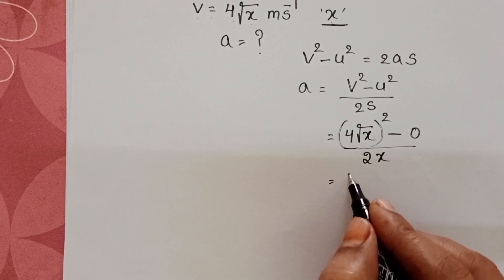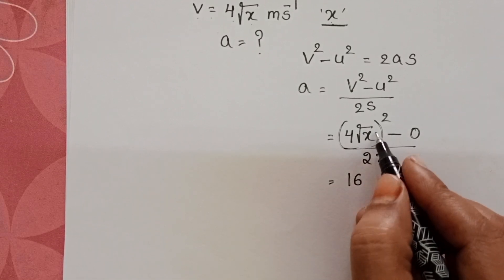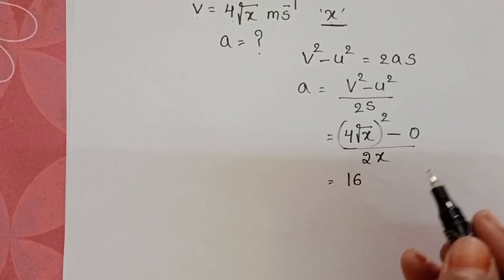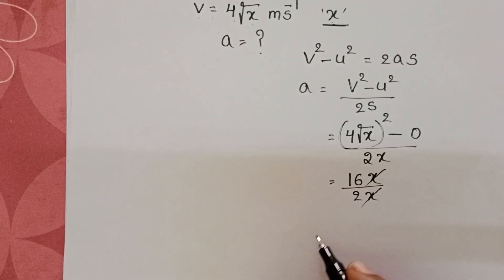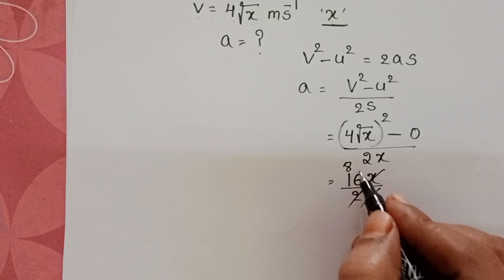4 whole square, 16. Square root of x whole square becomes x. 16x by 2x. 16x get cancelled. 2 goes into 8.